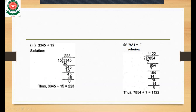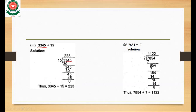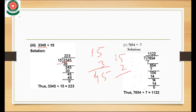Come to part 3: 3345 divided by 15. We place 3345 inside the division form and 15 outside. We take two digits: 33. We multiply 15 times 2 to get 30, and 15 times 3 gives 45. Since 45 is greater than 33, we take 15 times 2 which is 30.